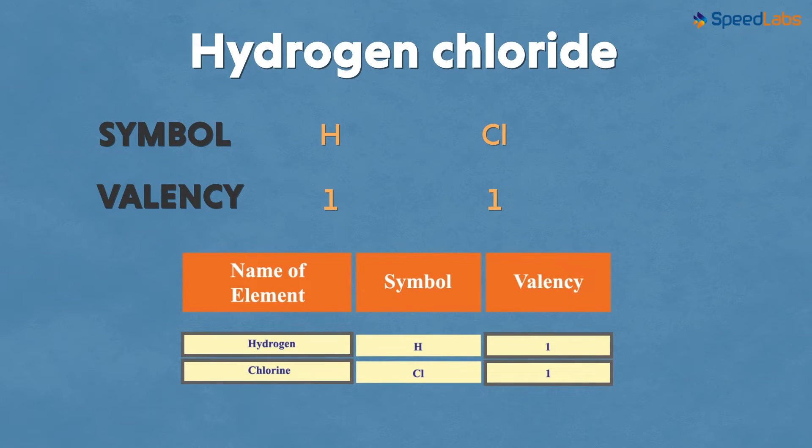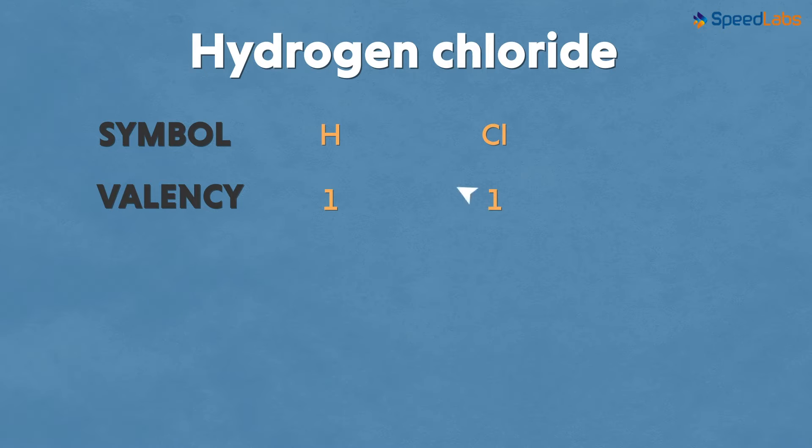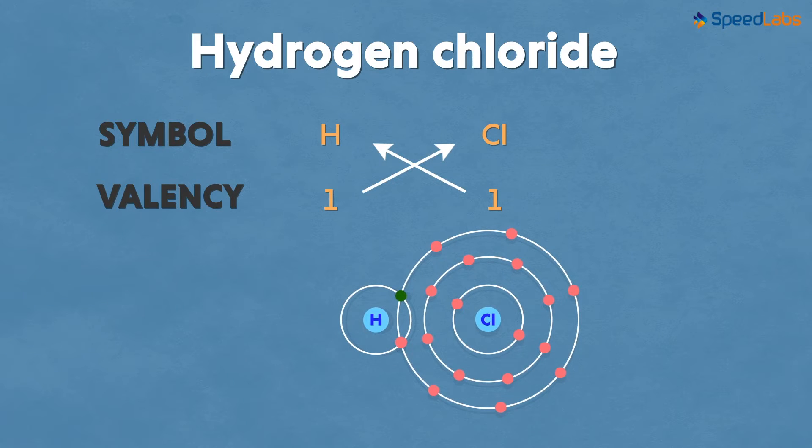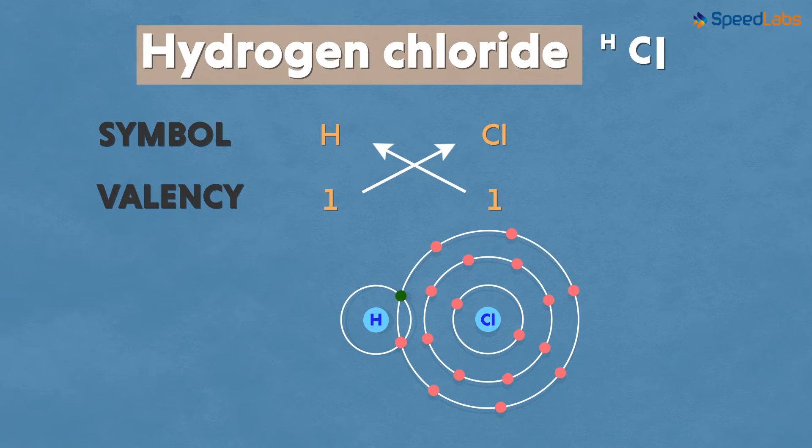Both have a tendency to acquire one electron. That means one hydrogen atom will require bonding with one chlorine atom. Absolutely! Thus, the chemical formulae for hydrogen chloride will be HCl.